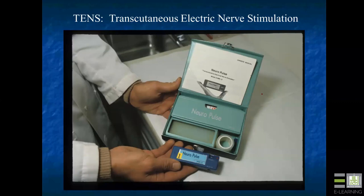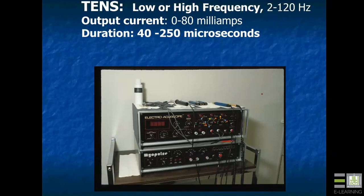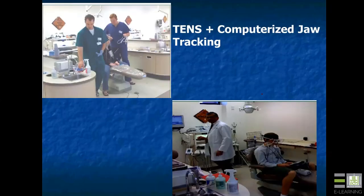TENS — transcutaneous electrical nerve stimulation — can also be considered and is found to be effective in controlling pain. Certain types can also help relax muscles. It's not curative but is a manner of managing pain that is reversible, and I consider it a first-line palliative therapy if needed. You can get specific with an electroacroscope — there are many types of TENS, either low or high frequency, and you can vary milliamps and microseconds. TENS combined with computerized jaw tracking can produce dramatic muscle relaxation in some patients.